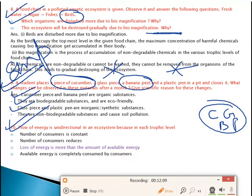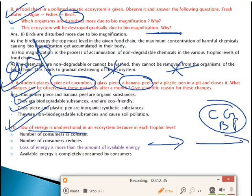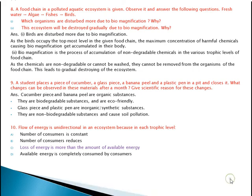Next — also from the 2019-20 previous year exam: Flow of energy is unidirectional in an ecosystem because — the answer is — loss of energy is more than the amount of available energy. Whenever energy flows from one trophic level to another, there is some loss of energy, and that loss is greater than the amount of available energy. Energy flow is in only one direction.